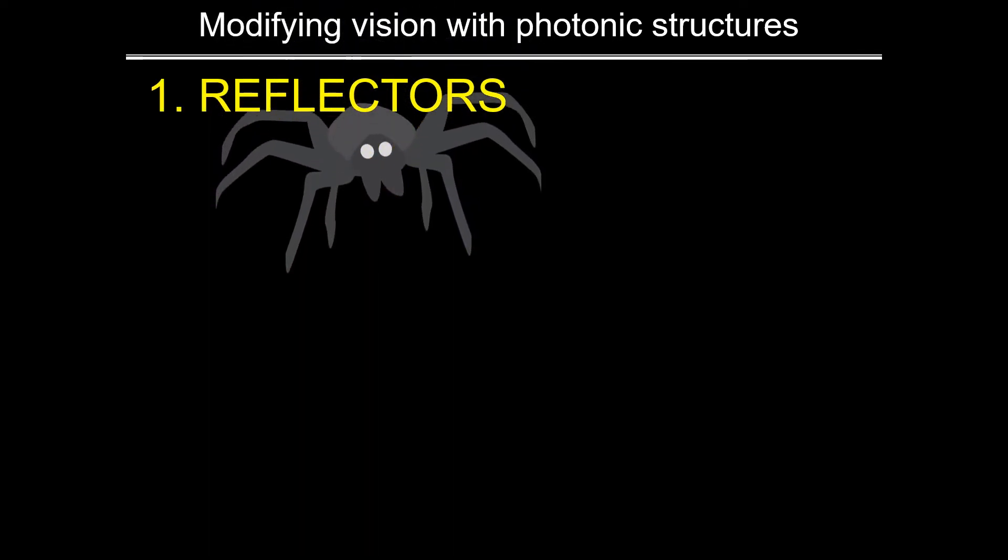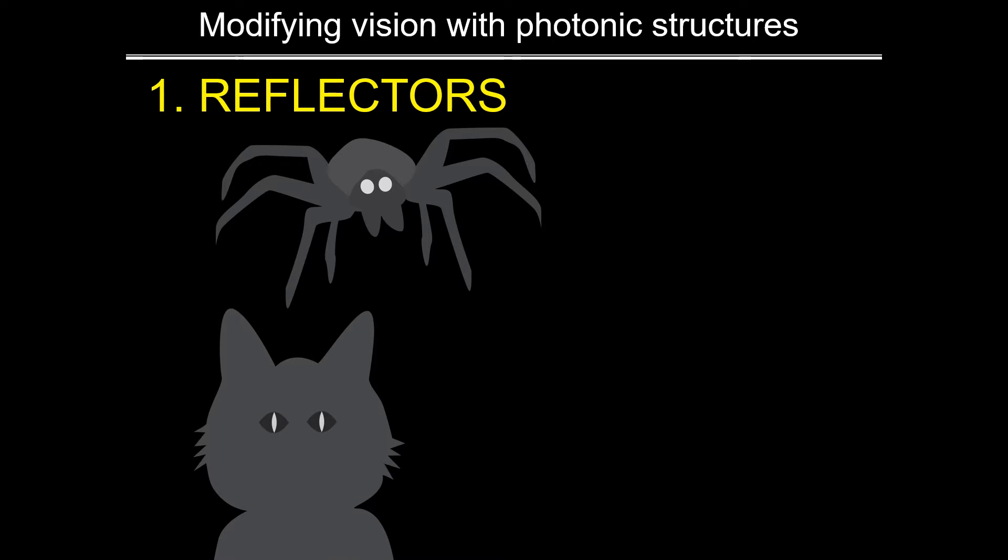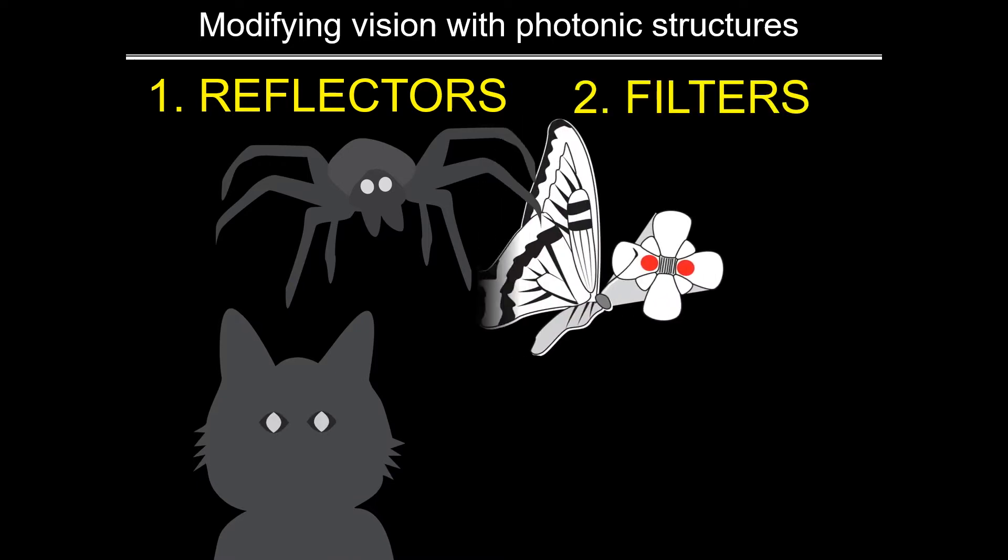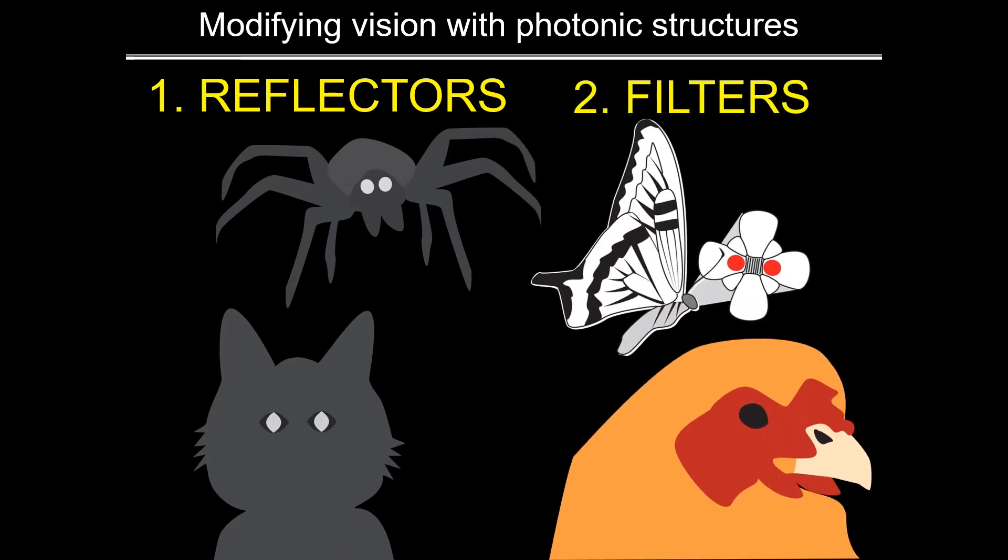Animal visual systems can only be modified by two types of photonic or light-interacting structures: reflective mirrors, which are what makes some animal eyes appear to glow in the dark, or colorful filters like oil droplets expressed in many bird retinas.